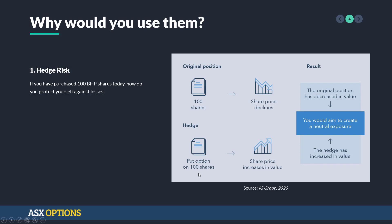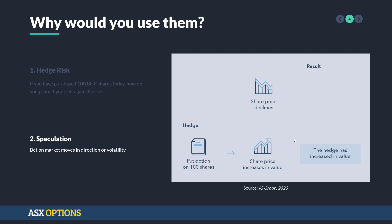We're going to enter a contract called the put option — we won't discuss what that is now, as we'll talk about it in later tutorials. But what happens is, if the share price declines, this put option is actually going to increase in value. So the result is that even though the shares decrease in value, the hedge contract increases in value. The aim with any good hedge is to have a neutral exposure, so at the end of the day, it doesn't matter whether the share is going to go up or down. The other reason we might use options is for speculation — to bet on market moves in a direction or for volatility. We'll get into this further in further lectures.